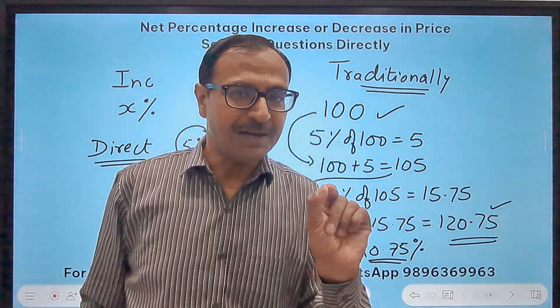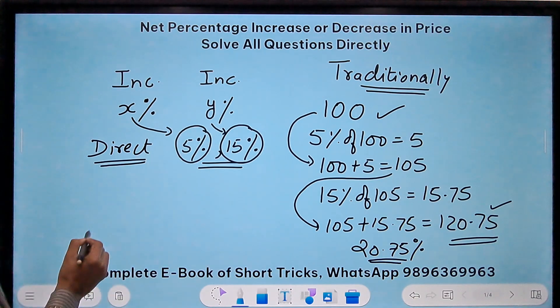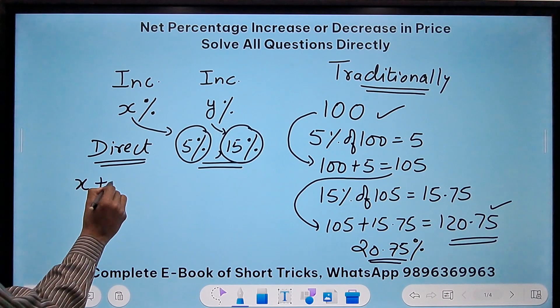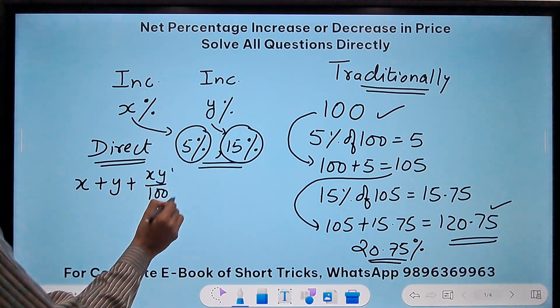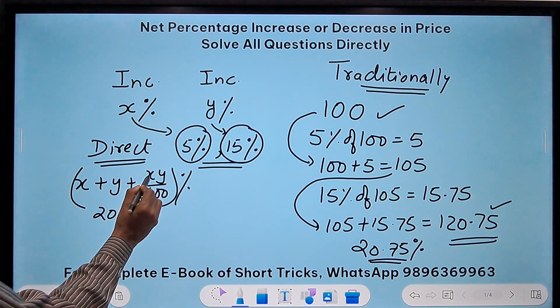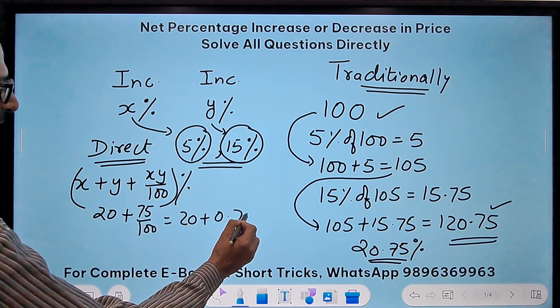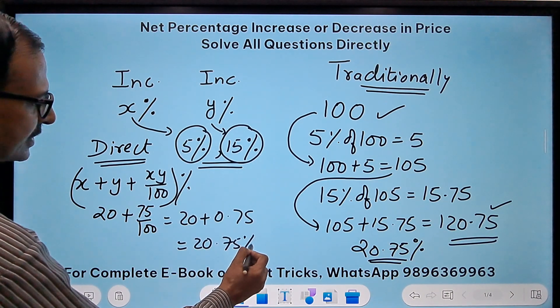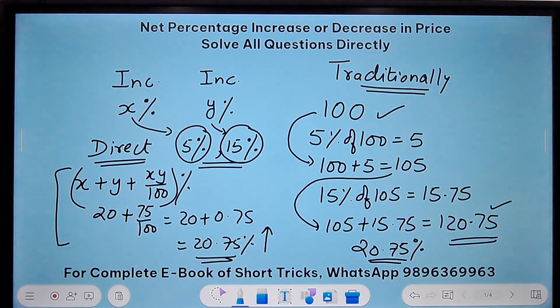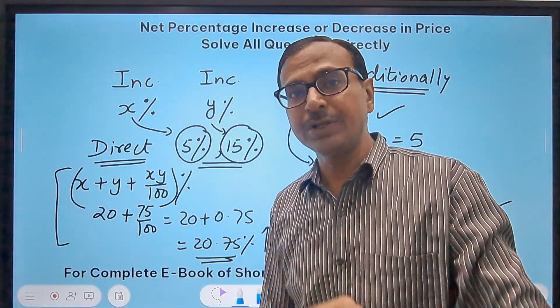Now let's see the magic. Directly the net percentage can be found using the trick x plus y plus xy by 100 percent. You will see how beautifully the trick works: 5 plus 15 is 20, then 5 into 15 is 75 by 100, that is 20 plus 0.75, and the straightforward answer is 20.75 percent increase. Same value obtained through the direct shortcut trick.